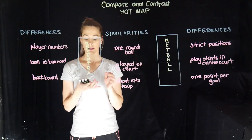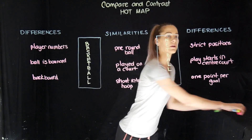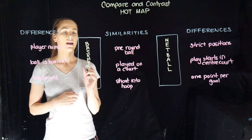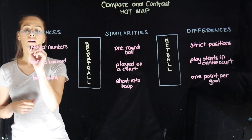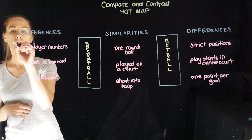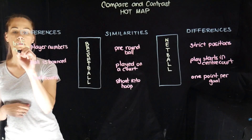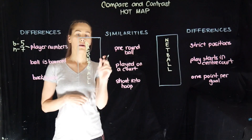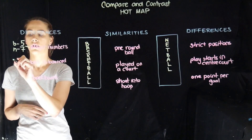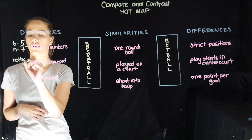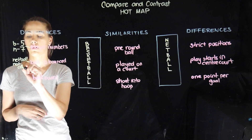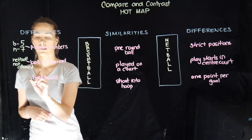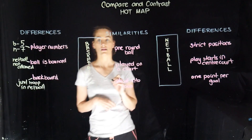Now we're going to go ahead and explain why. So the player numbers — this is a difference because in basketball there are five on court, whereas in netball there are seven. That's one reason and explanation why. In basketball the ball is bounced, whereas in netball you're not allowed to bounce the ball. And basketball has a backboard, whereas netball just has the hoop.